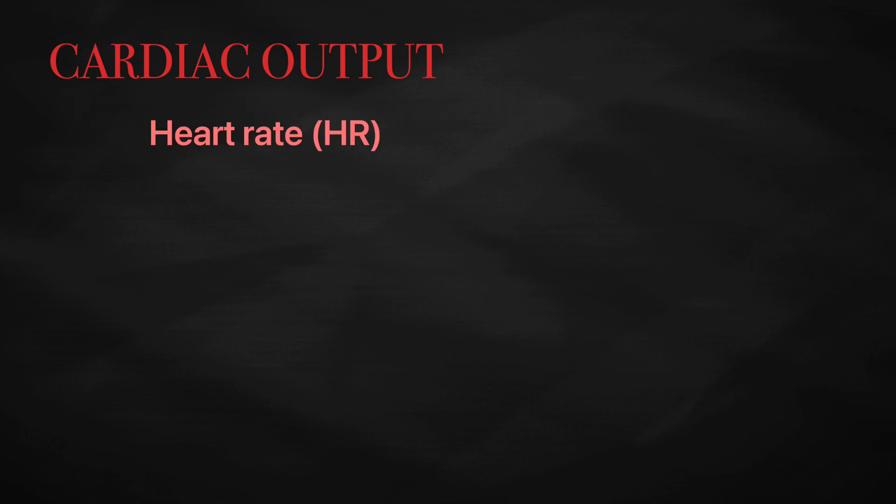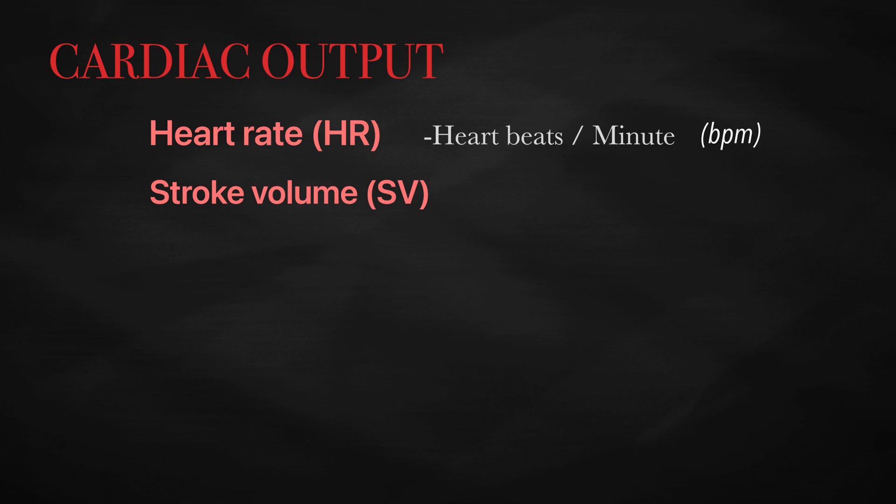Heart rate and stroke volume determine cardiac output. The heart rate is the number of heartbeats in one minute, and the volume of blood ejected by the left ventricle during a heartbeat is the stroke volume, which is measured in milliliters.